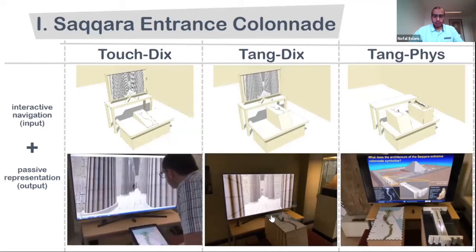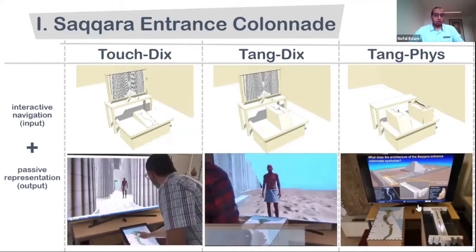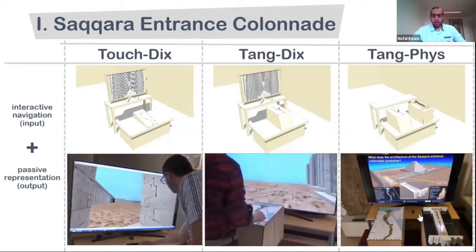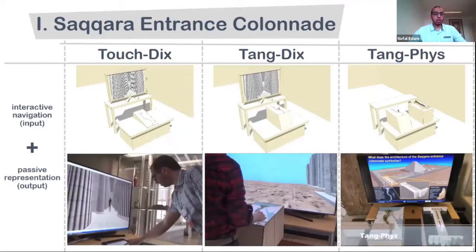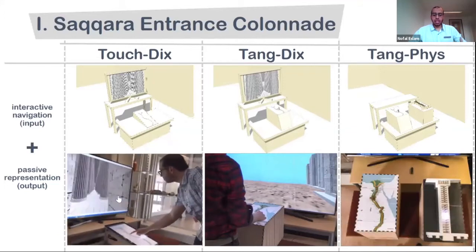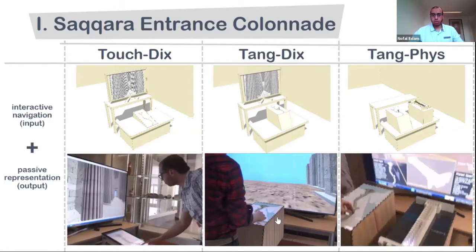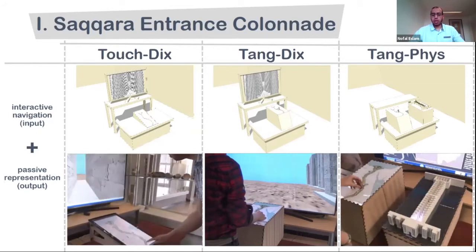We designed, implemented, and experimented with three different conditions. Each condition has an interactive navigation input — a map of ancient Egypt — and a passive representation output, which is a view of the entrance colonnade that dynamically changes according to the user's interaction. In the first condition, a touch screen shows the map of ancient Egypt with a walkthrough navigation of the building. In the second condition, there is a physical installation of the map with a 3D printed statue of the pharaoh and a walkthrough navigation. In the third condition, the physical map and 3D printed statue are combined with a marker and different LEDs that light up according to the position of the pharaoh.